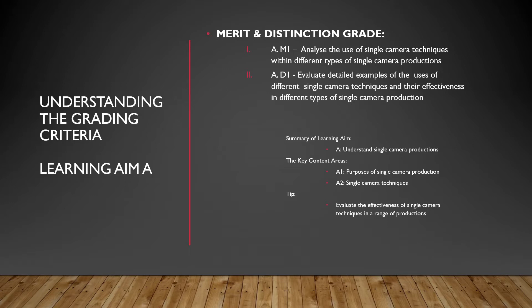Merit and Distinction for Learning Aim A. For AM1, you need to analyse different types — which is plural — so don't just use one example; you need to analyse a series of examples. For Distinction, you need to evaluate detailed examples of the uses of different single camera techniques and their effectiveness in different types of single camera production. The difference is: for Merit you analyse, and for Distinction you evaluate. I strongly suggest you start off by analysing these single camera techniques and then move on to evaluating them, so you are able to keep up with exactly what you are doing and how you are doing it.